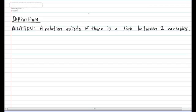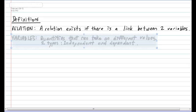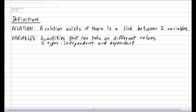A relation exists if there is a link between two variables. This is similar to in real life a relationship between boyfriend and girlfriend. A relation exists if a boy likes a girl and vice versa. Next definition we have is for the word variables. The word variable means quantities that can take on different values. From science class you note that there are two types: independent and dependent. In math many variables are represented by letters such as X, Y, and Z.